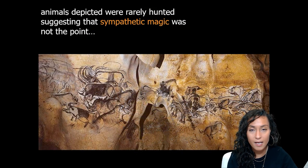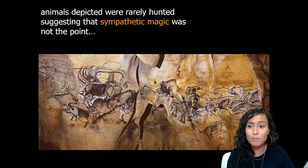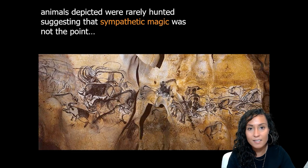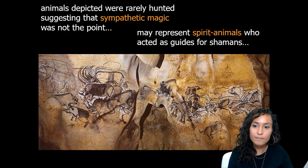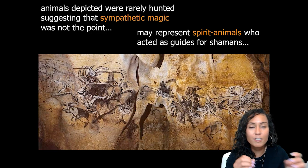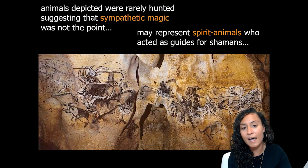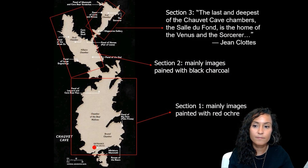These animals were rarely hunted, so the images in Chavot are not simple depictions of daily life. Rather, these animals had a particular significance not tied to subsistence, but to social and religious practices. We can imagine that the depiction of these particular animals in Chavot represents the idea that they were spirit animals or guides that would help shamans on their journeys.